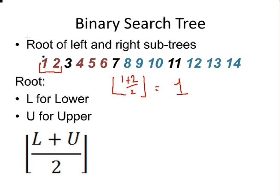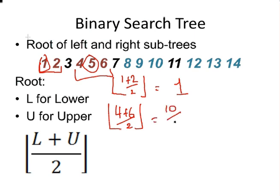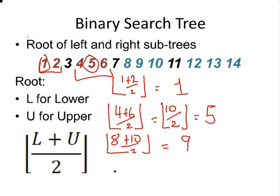is the root of that sub-tree. This 4 plus 6 over 2. That means that 5 is the root of that sub-tree. That's 10 over 2. And that's 5. 8 plus 10. The floor of that is 9. And the floor of 12 plus 14 over 2. That's simply 13.